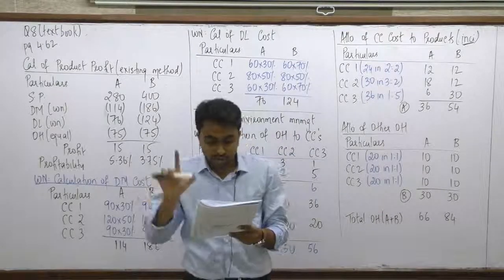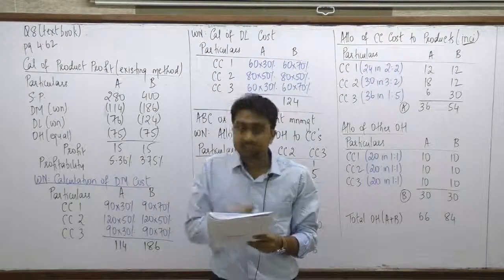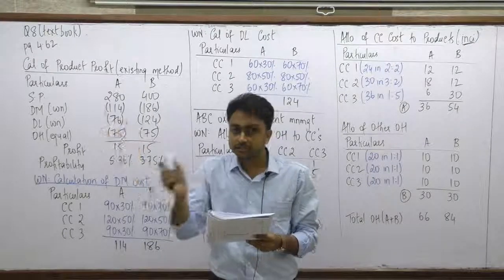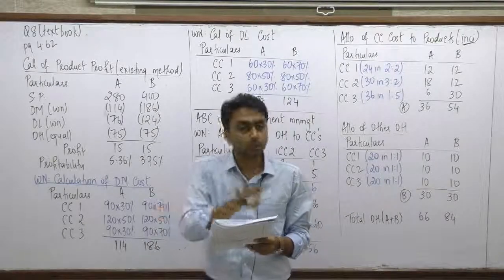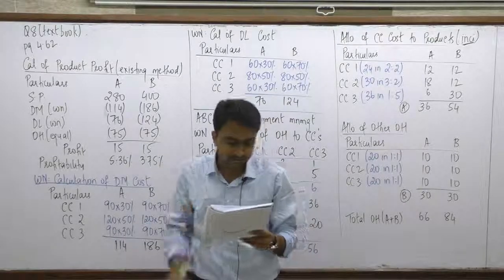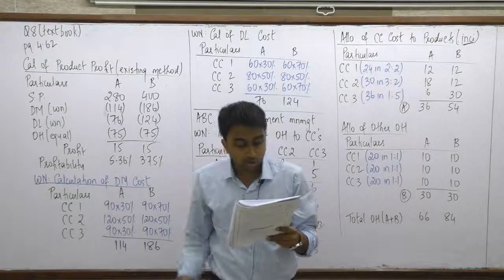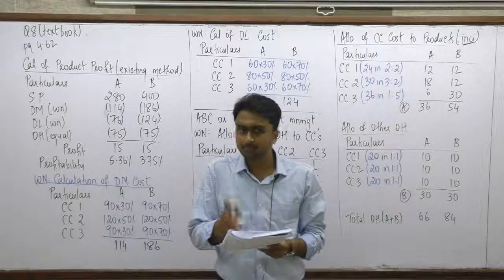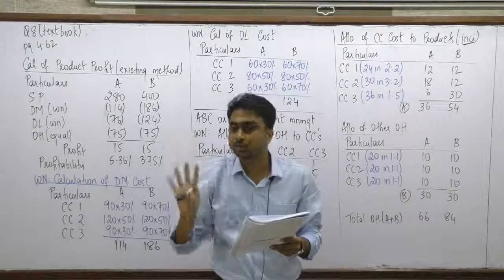The total direct material (DM) cost per kg of fertilizer produced is ₹300. This is the total cost of the finished goods — some part of DM is in Cost Center 1, some in Cost Center 2, and some in Cost Center 3; the summation is 300. Similarly, the direct labor (DL) cost per kg of fertilizer produced is ₹200, again split across the three cost centers.